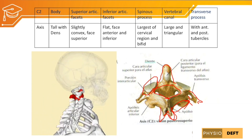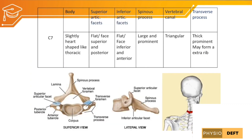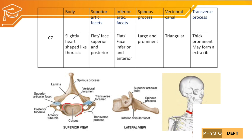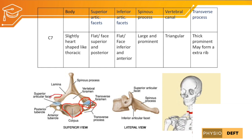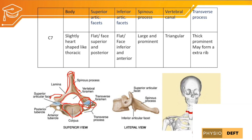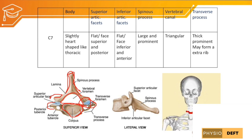For the atlas, the most unique feature is that it has no body and is ring-shaped. The third atypical vertebra is C7. Its body is slightly heart-shaped, similar to a thoracic vertebra. The superior articulating facet is flat, facing superiorly and posteriorly. The inferior articulating facet is also flat, facing inferiorly and anteriorly. The spinous process is the most prominent in the cervical region — large and prominent. The vertebral canal is triangular, and the transverse process is prominent and may have an extra growth called a cervical rib.